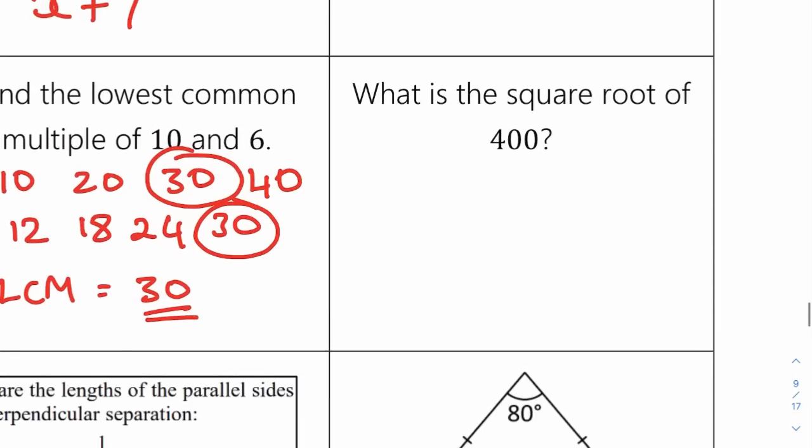What is the square root of 400? Use your calculator. The square root of 400 is 20.